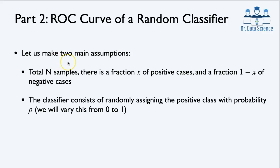To solve this problem we make two assumptions. Let's say we have n data points, and a fraction X of these are positive cases, where X is a number between 0 and 1. For a balanced case, X = 0.5. We also assume the classifier randomly assigns positive labels with probability ρ, where ρ is between 0 and 1. So to recap: X is the fraction of positive cases, and ρ is the probability that the classifier predicts the label as positive.